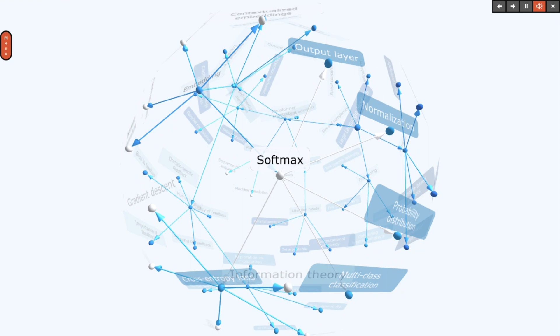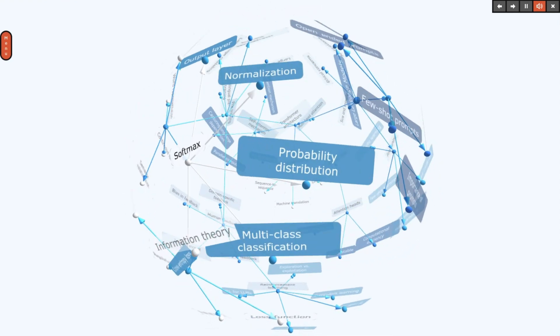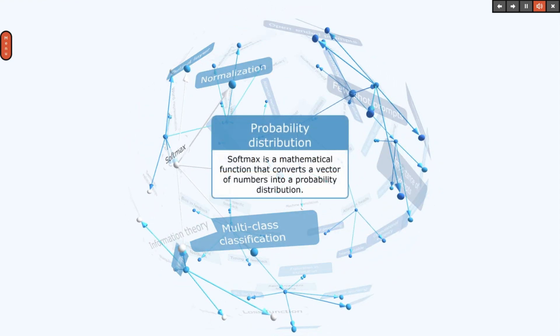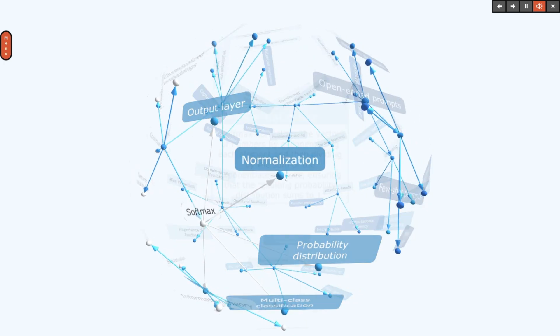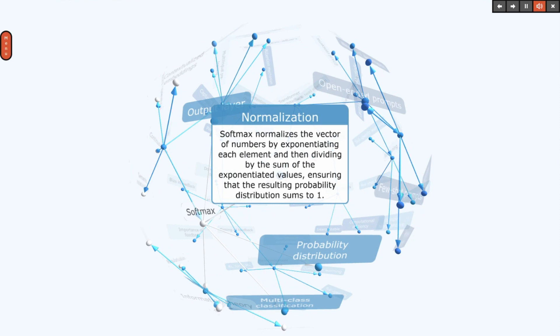Softmax is a mathematical function that converts a vector of numbers into a probability distribution. It normalizes the vector by exponentiating each element and then dividing by the sum of the exponentiated values, ensuring that the resulting probability distribution sums to 1.